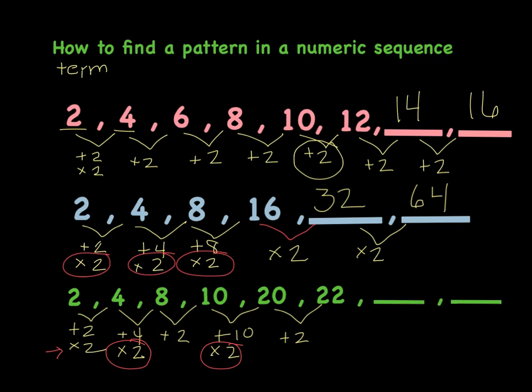But what I do notice is that I, in addition, have an add 2, and an add 2, and an add 2. So I can see that it is alternating from add 2 to multiply by 2, to add 2, to multiply by 2, to add 2. And what I would do next is multiply by 2.